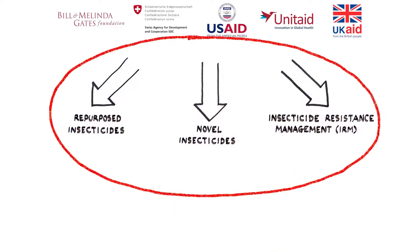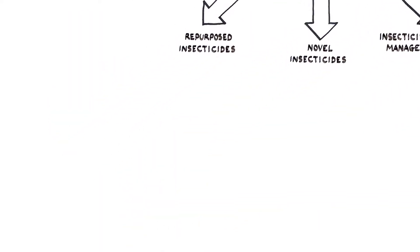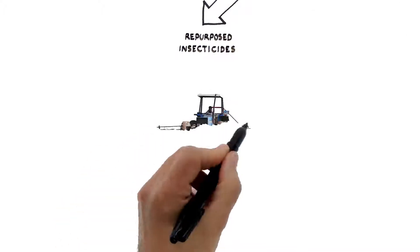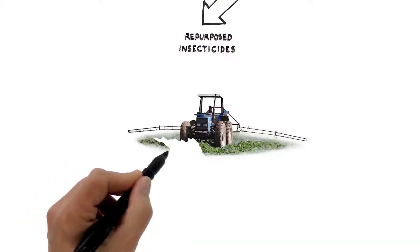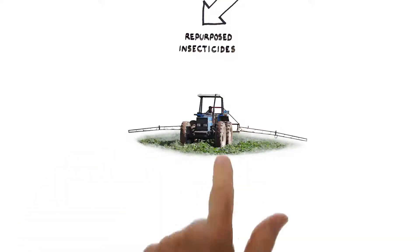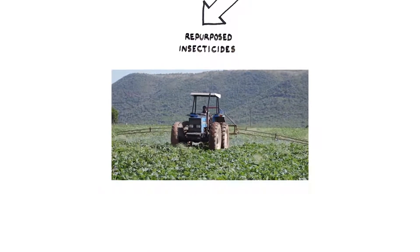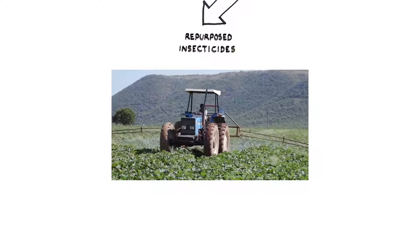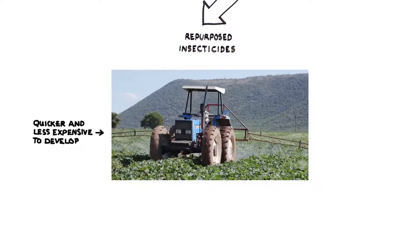These three things are critical to long-term vector control and malaria eradication. And here's why. Repurposed insecticides are based on insecticides already used in agriculture. So many of the regulatory and safety requirements have already been met. Development is focusing on introducing these insecticides in formulations designed for vector control.